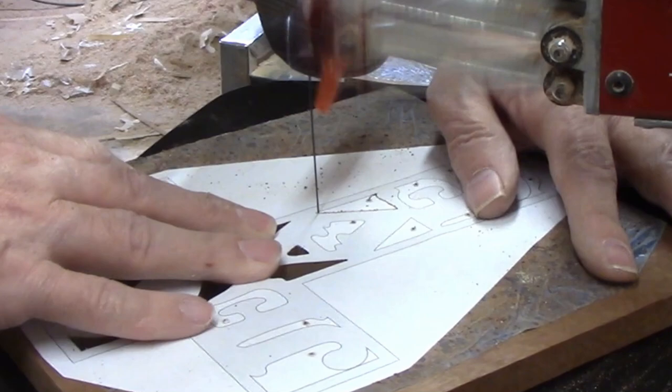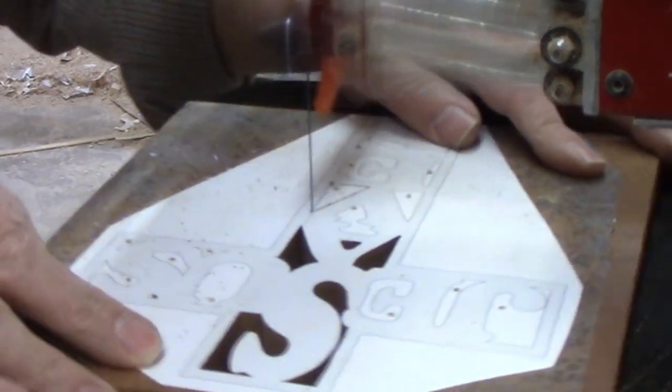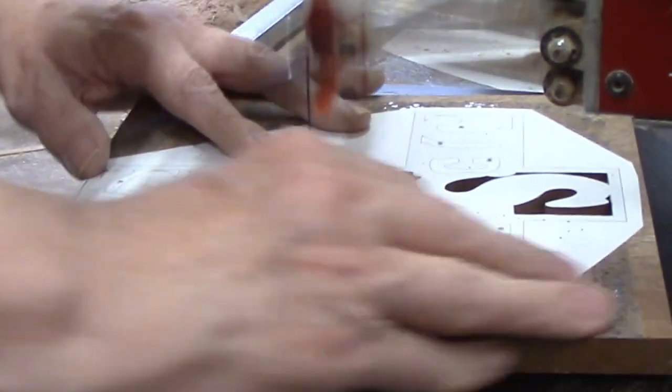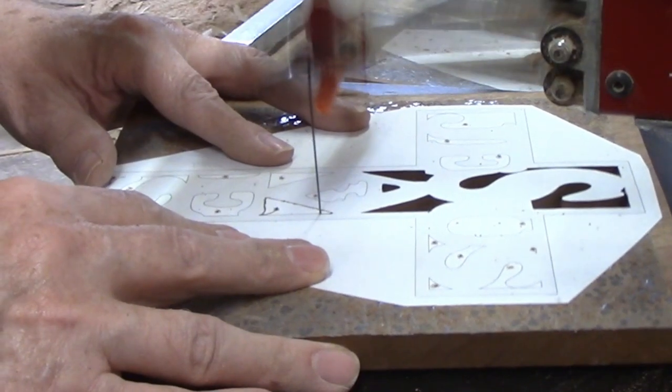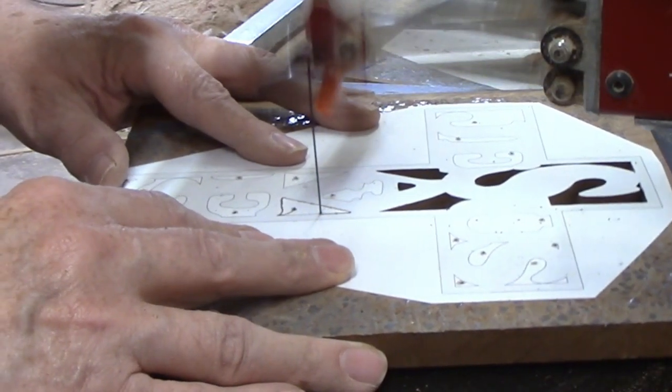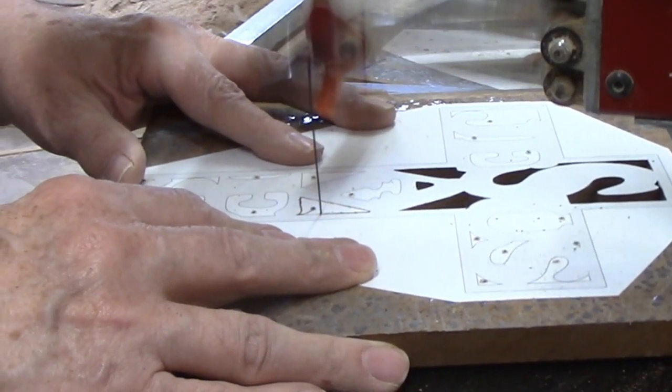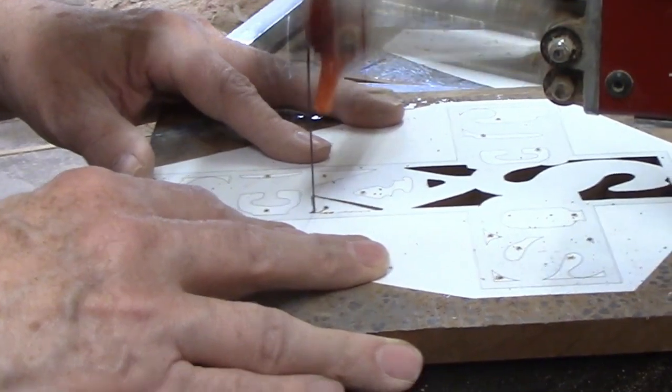When you come to the next angle you follow the same procedure. Cut right up to the intersection then back the blade off slightly and turn the workpiece. Once you're aligned with the new direction start cutting again. The same procedure is followed at the third angle.